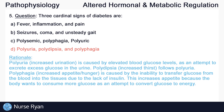Polyuria, which is increased urination, is caused by elevated blood glucose levels as an attempt to excrete excess glucose in the urine. Polydipsia, which is increased thirst, often follows polyuria. And polyphagia, which is increased appetite or hunger, is caused by the inability to transfer glucose from the blood into the tissues due to the lack of insulin.